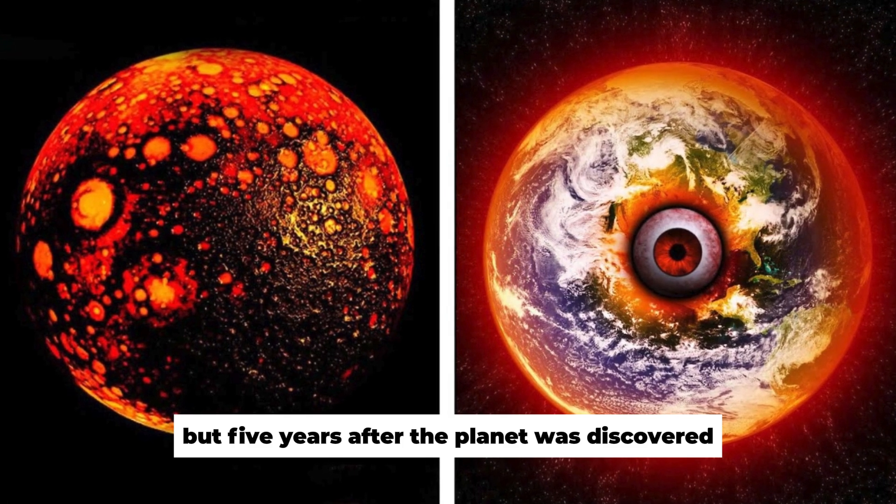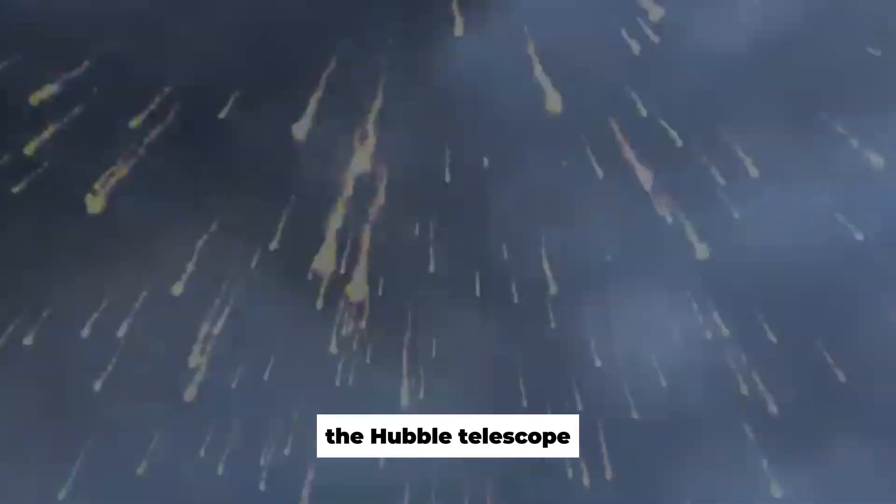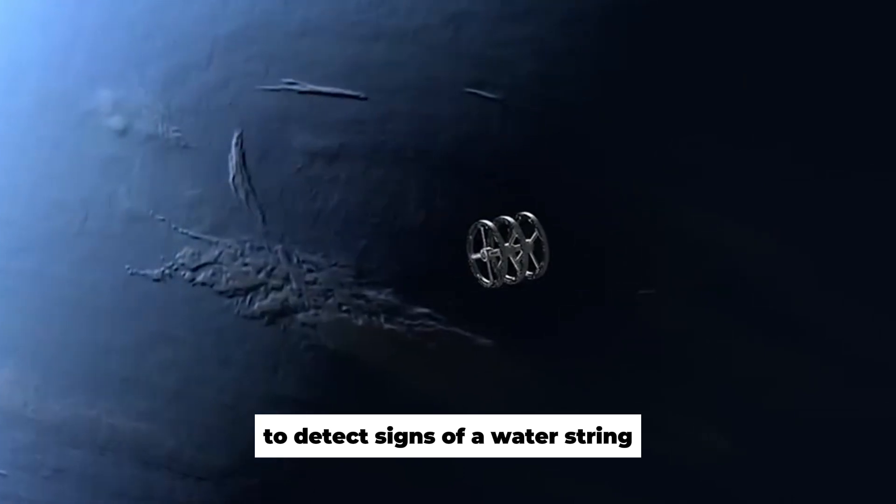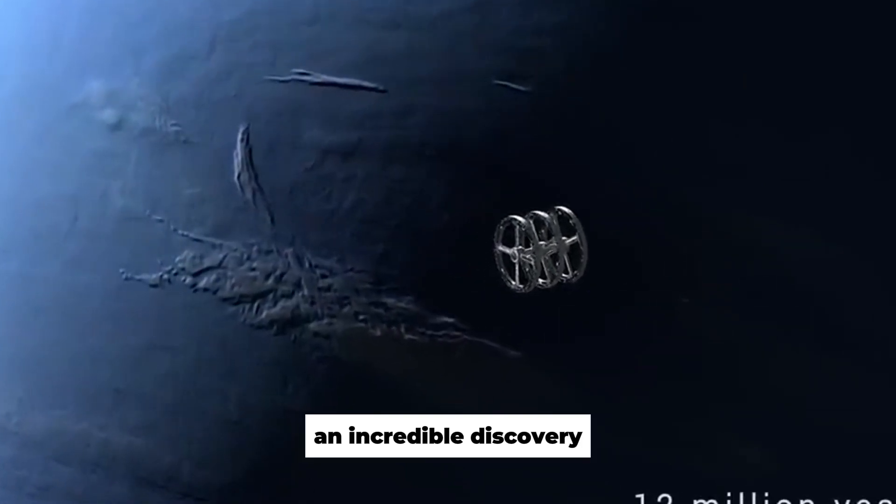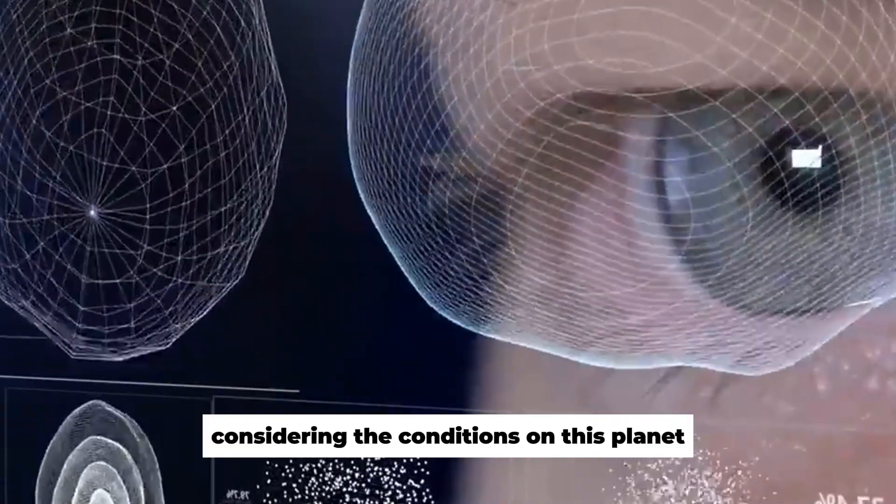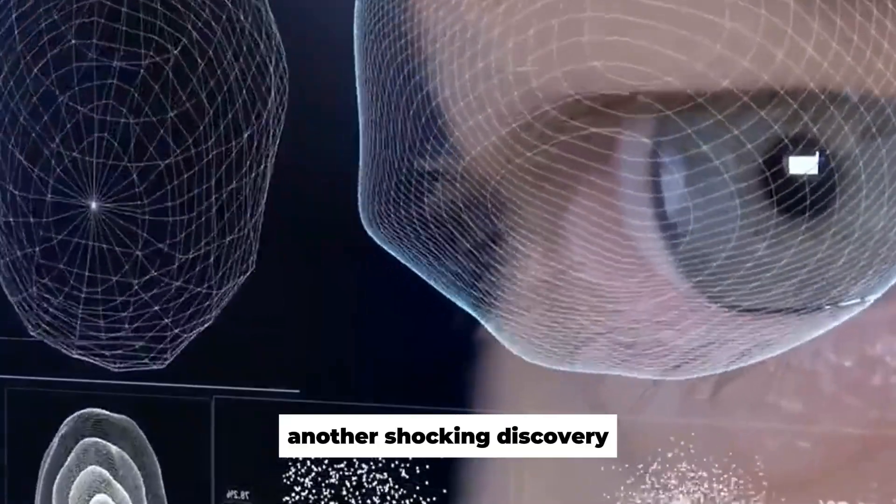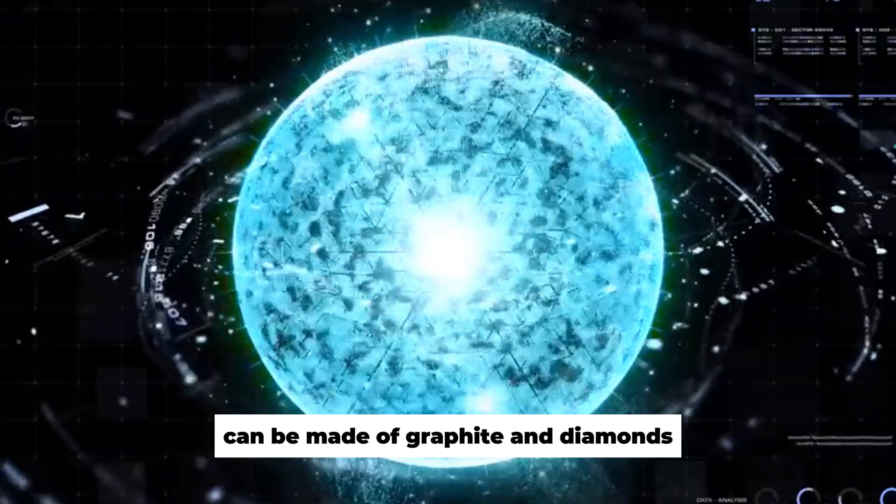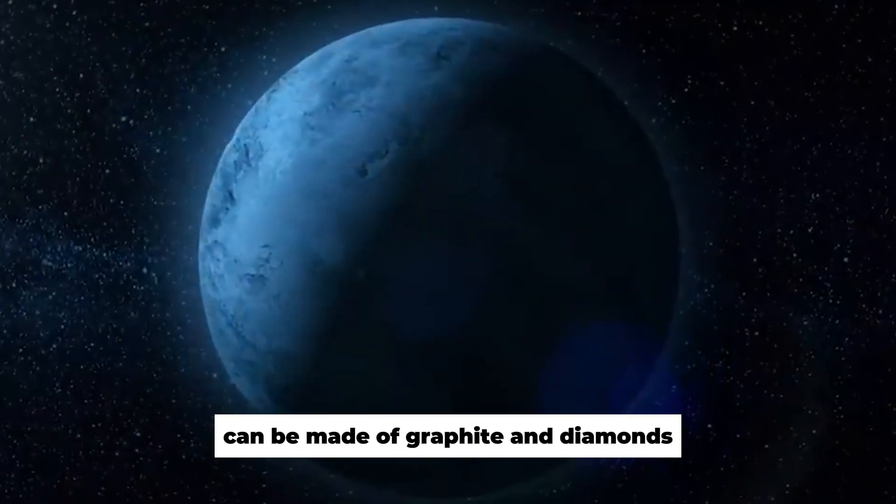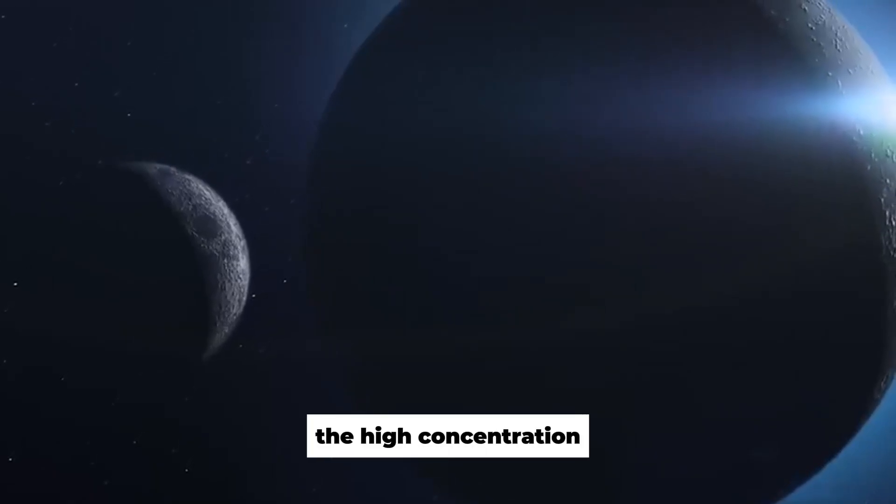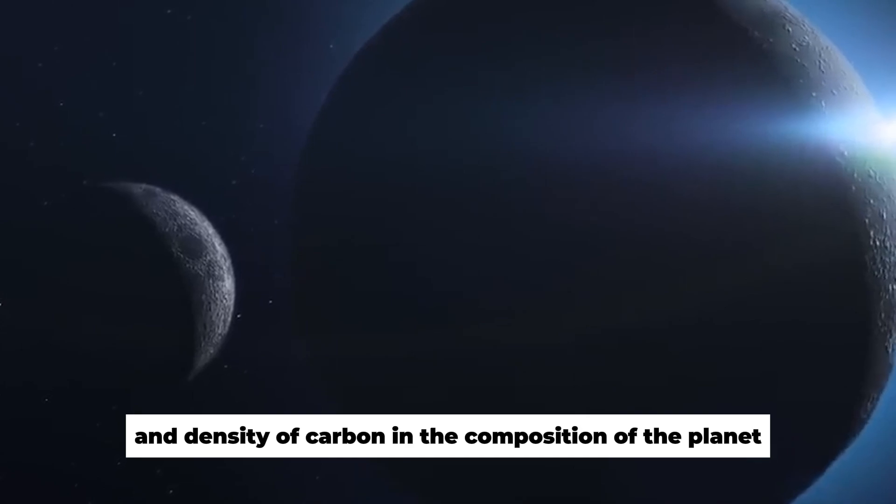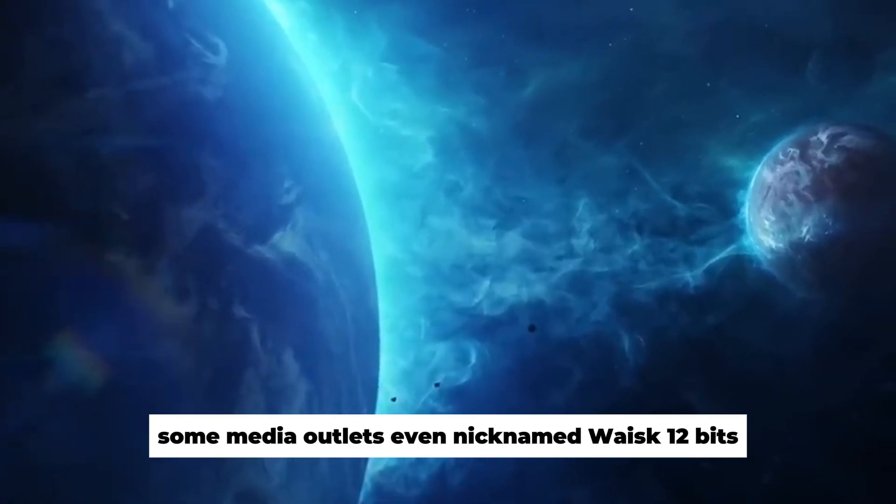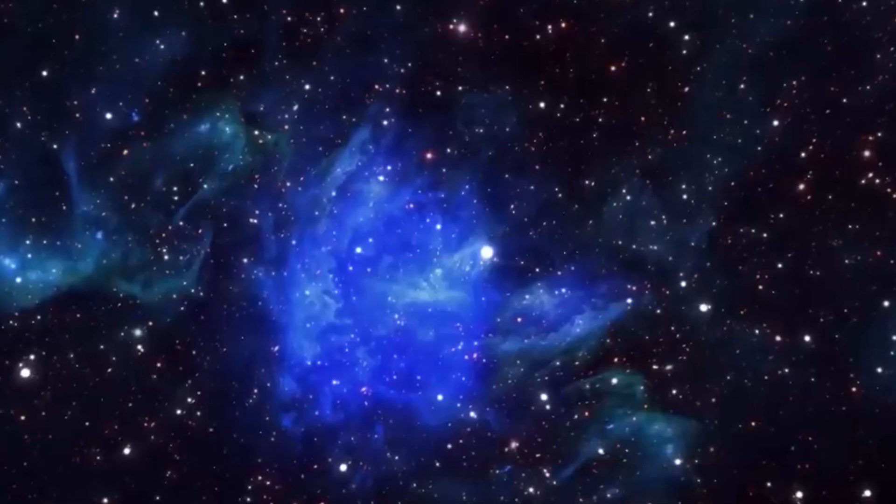But five years after the planet was discovered, the Hubble telescope managed to use the spectroscopy method to detect signs of a water stream. An incredible discovery considering the conditions on this planet. Another shocking discovery is that the hard surface of this planet, if it indeed exists, can be made of graphite and diamonds. The reason for that is the high concentration and density of carbon in the composition of the planet. Some media outlets even nicknamed WASP-12b, the diamond planet.